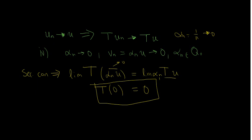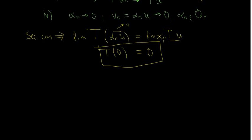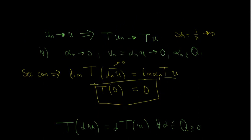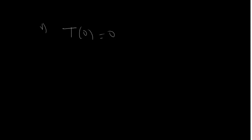We now have homogeneity fulfilled for all non-negative rational α. In step 5, in order to show homogeneity for negative numbers: we have that the transformation of zero is equal to zero from the preceding result, and zero can be written as the difference of an input with respect to itself. Taking u as u₁ and −u as u₂, we apply additivity.